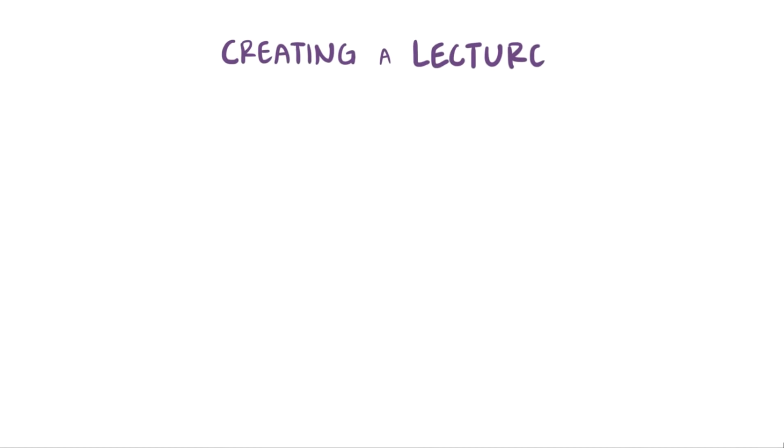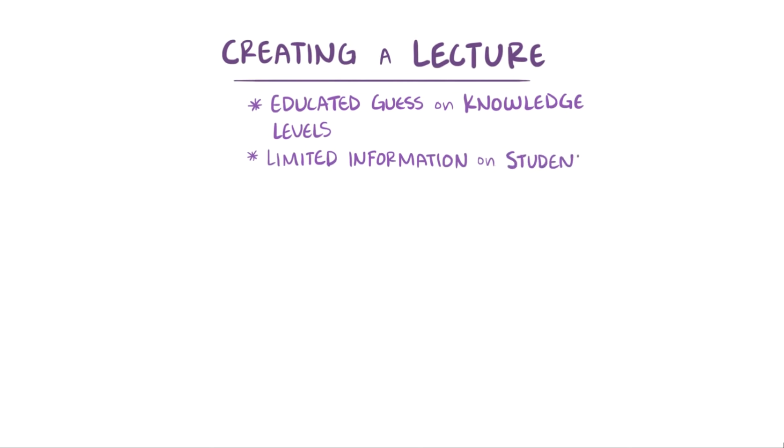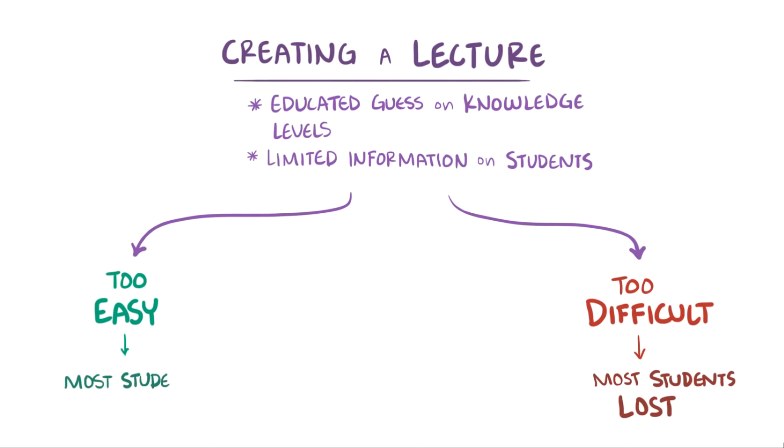Typically, when a teacher creates a lecture, they have to make an educated guess about the knowledge level of their audience, since they have limited information about what each student knows or remembers. If a lecture is too difficult, then most of the students will be lost. If it's too easy, then most of the students will be bored. So teachers typically end up lecturing to the mythical middle of the class and hoping for the best.